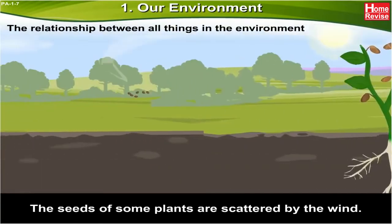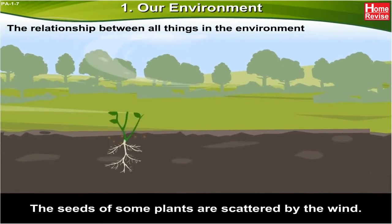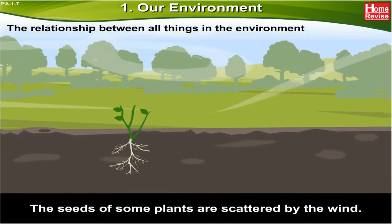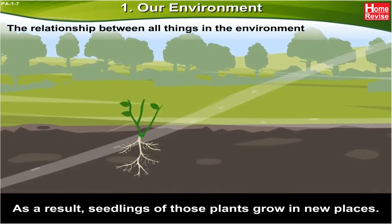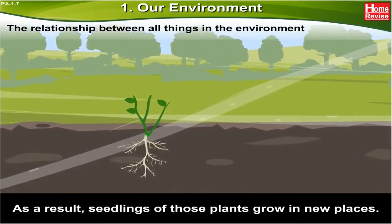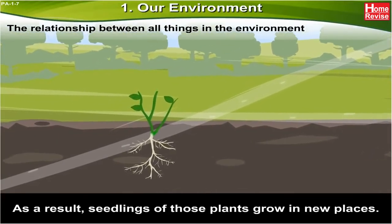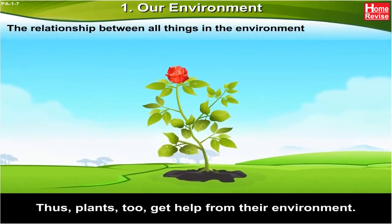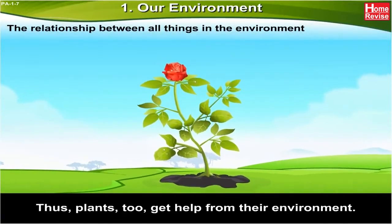The seeds from some plants are scattered by the wind. As a result, seedlings of those plants grow in new places. Thus, plants do get help from their environment.